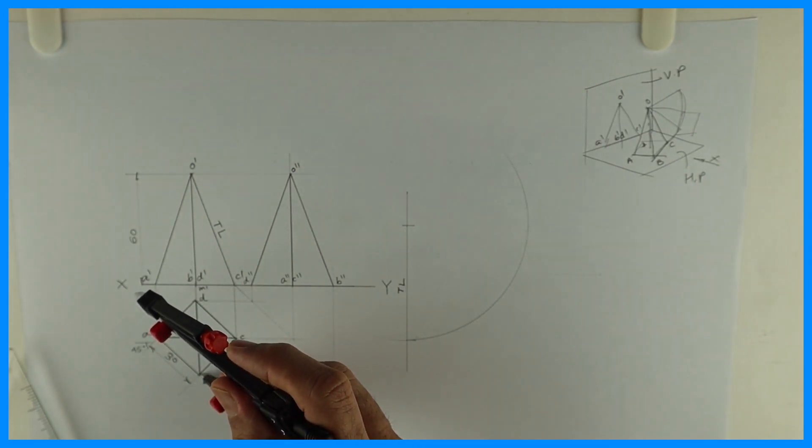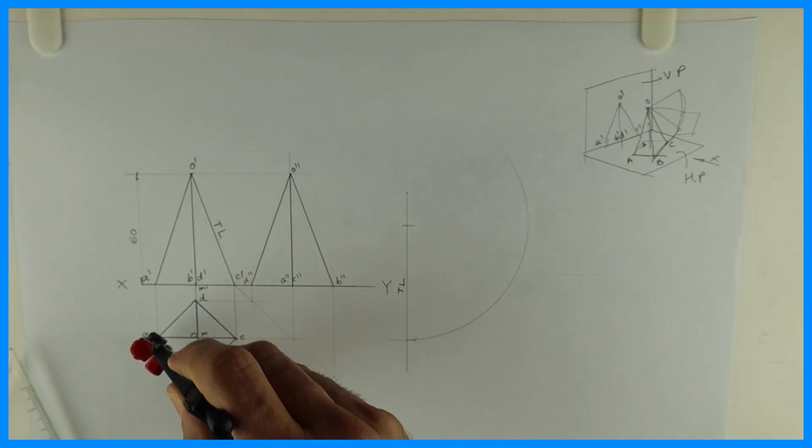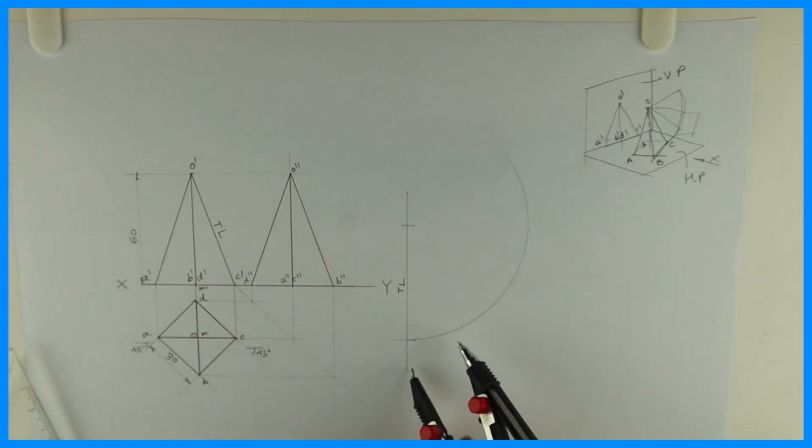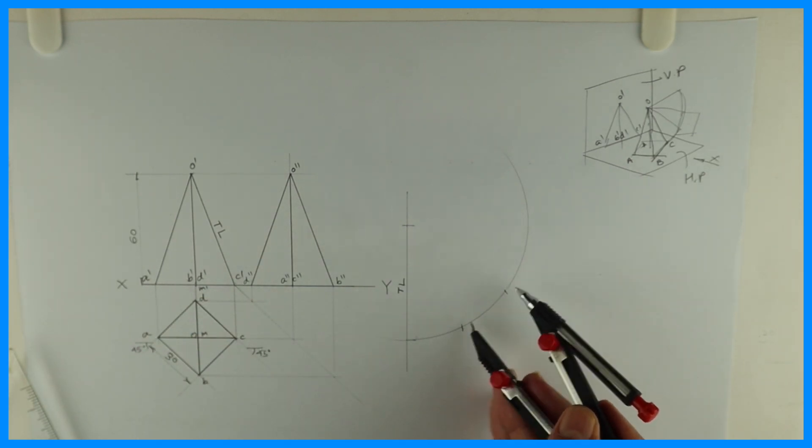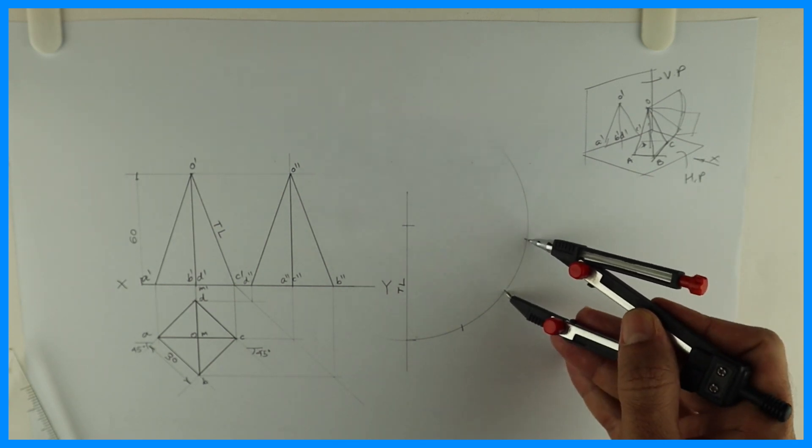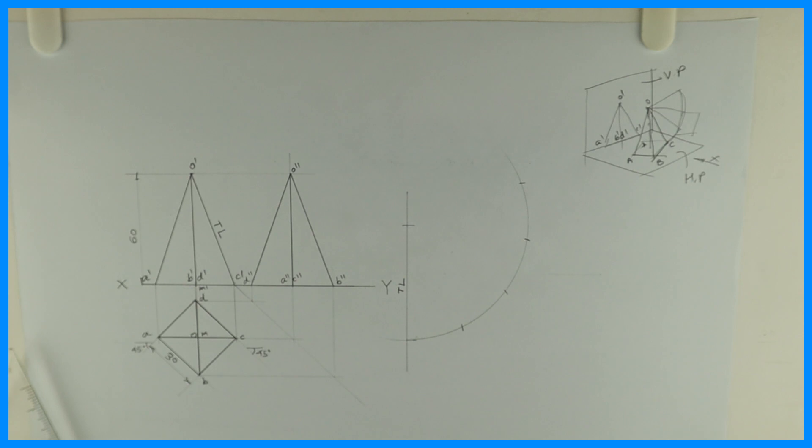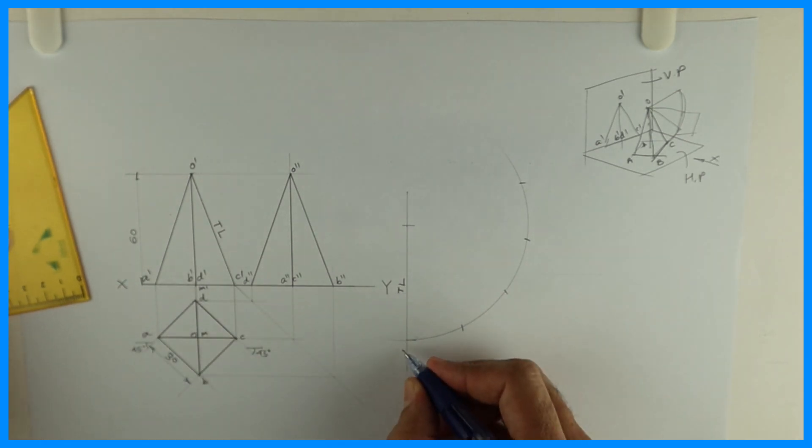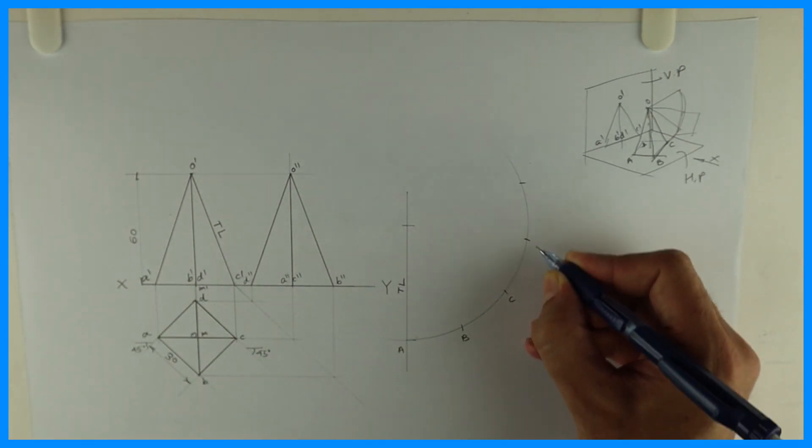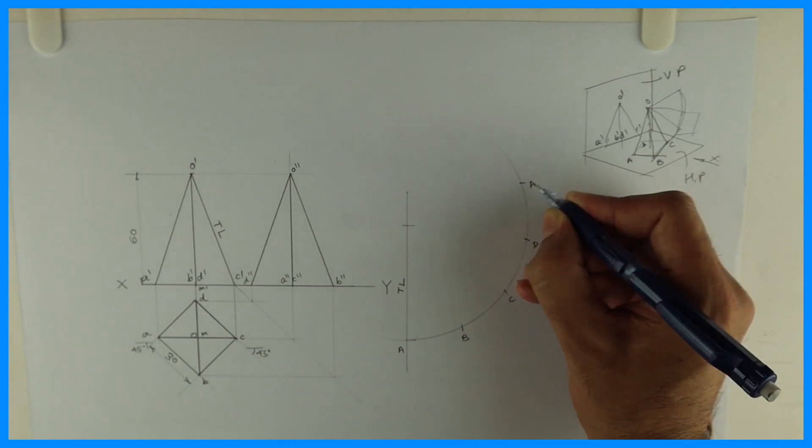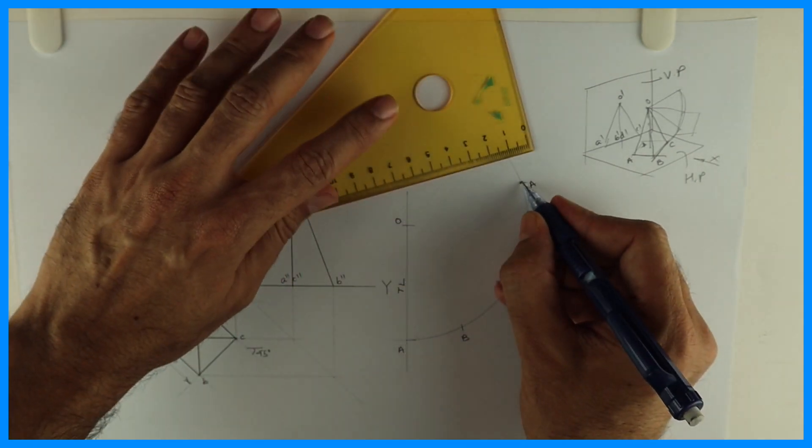Then I'll take A to B. B to C, C to D, and D to A. You can name this A, B, C, D, A.